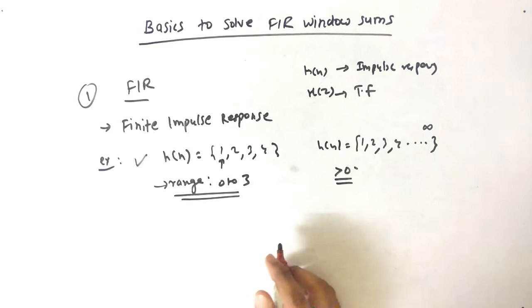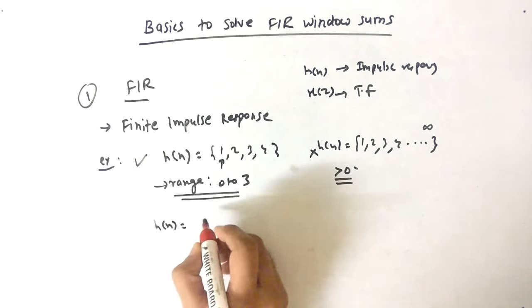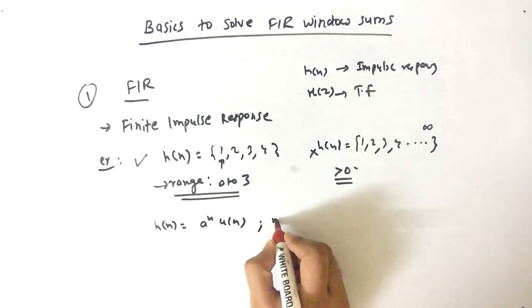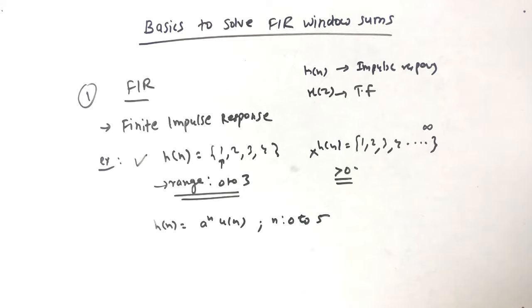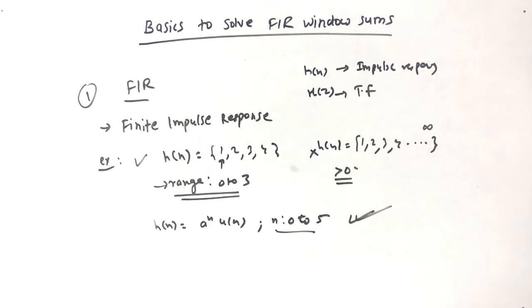Similarly, if I take second example, H of N is A raised to N U of N where N is between 0 to 5. Again, range is specified so this is Finite Impulse Response. So first basic was to identify what is Finite Impulse Response.